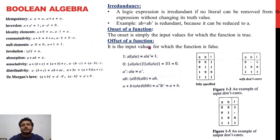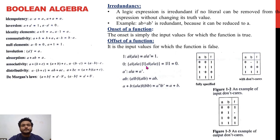We have the concepts of onset and offset of functions. The onset is the set of input values for which the function output is true. If for particular input values the function is false, we call that the offset. We also have don't-care conditions — for example, if A is 0 and the output function is 1 regardless of B, then the output F is not dependent on B; we say B is a don't-care condition.